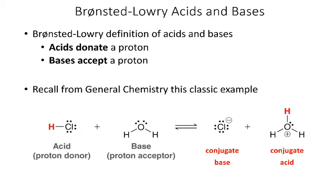Looking at this example, I have hydrochloric acid and water. Hydrochloric acid, being the acid, is going to donate or give that proton to the water. Because it gives up the H+, what's left is Cl-, and because the water is gaining an H+, it becomes H3O+.